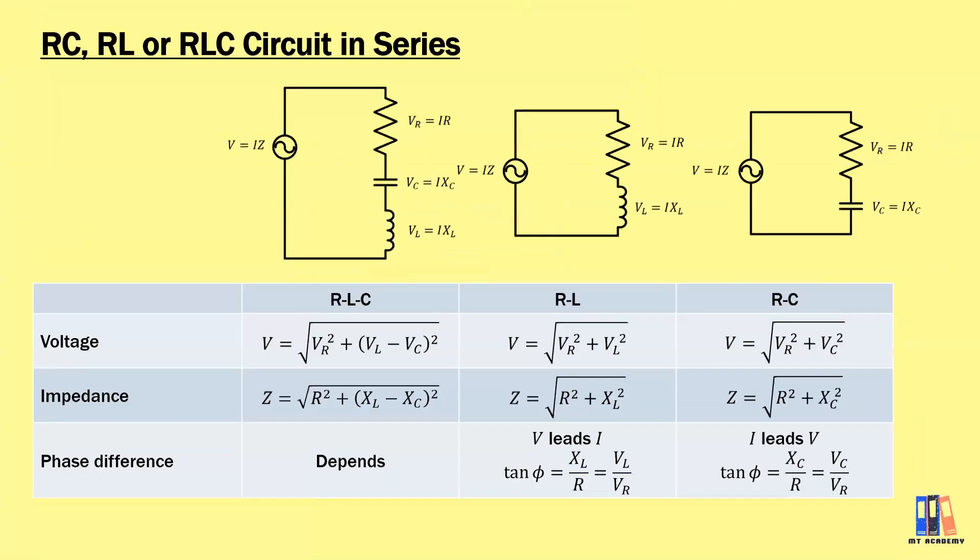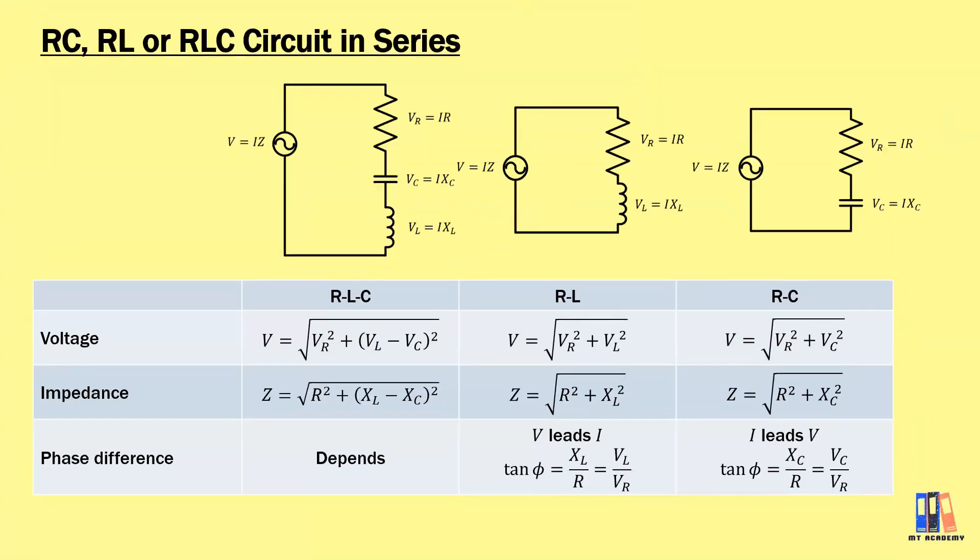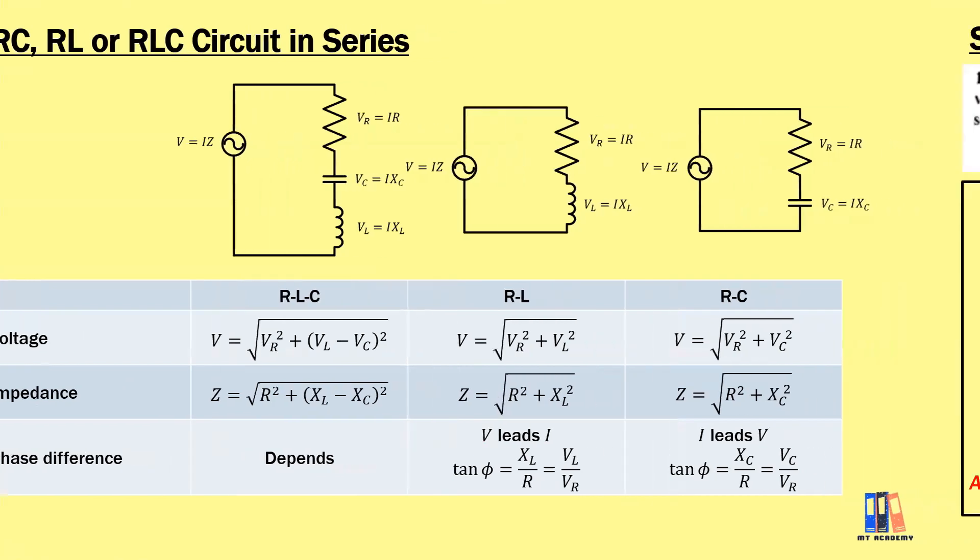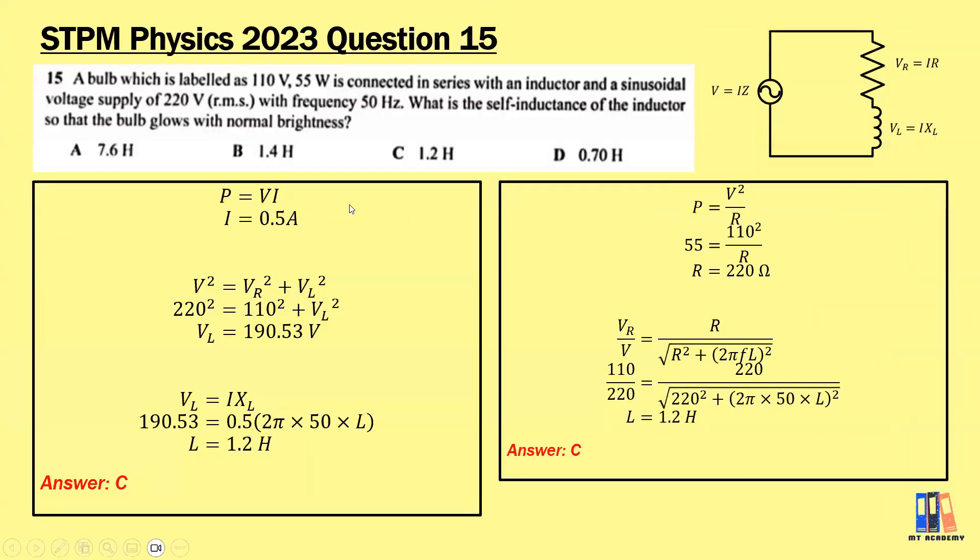We move on to the last topic, which is the RC, RL, or RLC circuit. Here is the summary of all the formulas that we have learned. In simple terms, the voltage and current are no longer in phase, so there is a special formula needed to calculate the voltage or the impedance. I'll leave this for you to do your own revision.